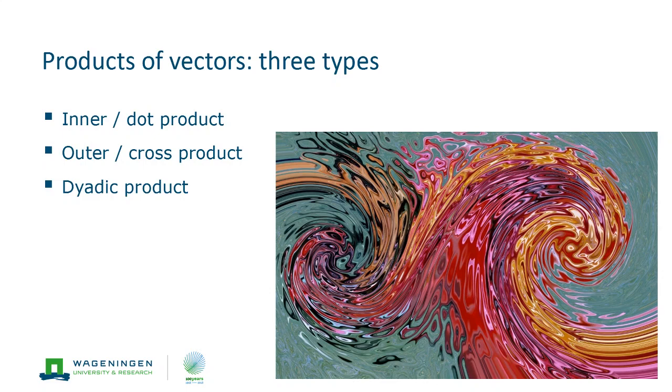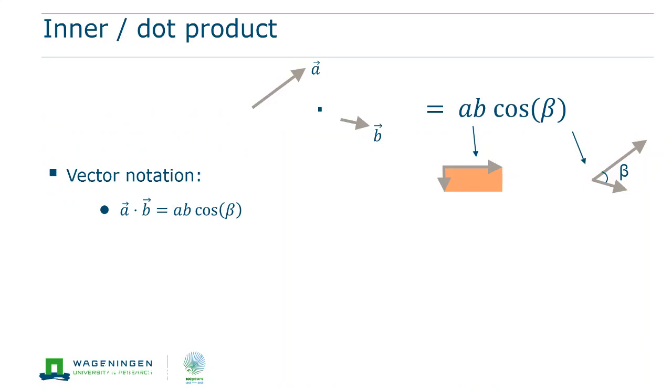Those three are the inner product, the outer product and the dyadic product. The inner product is indicated by a dot, and hence it is also sometimes denoted as the dot product.